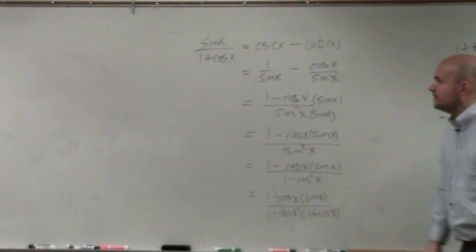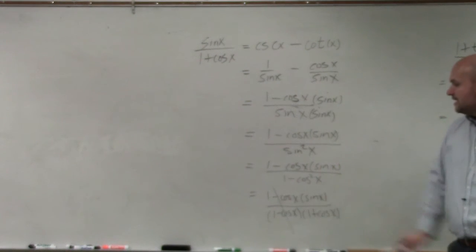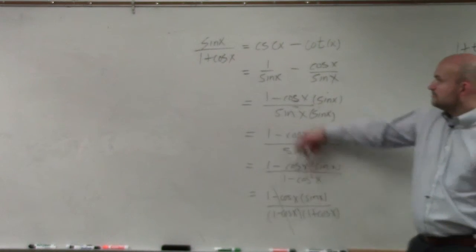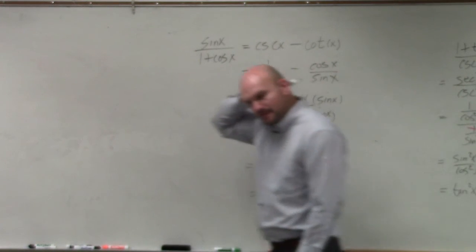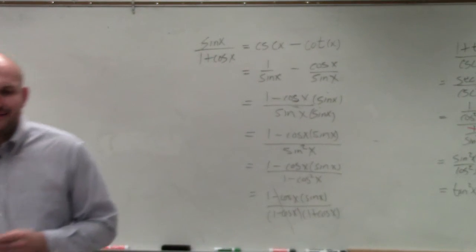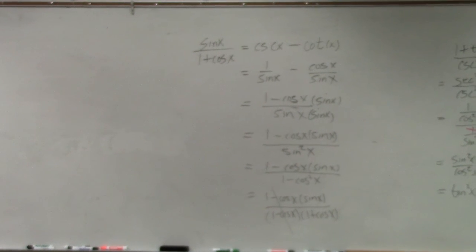And then, when I go ahead and do that, you guys can see the 1 minus cosine of x is divided out. And you're left with sine of x divided by 1 plus cosine of x, which is equal to the other side. So I think what technically would have been easier for you guys is to work on both sides on this.